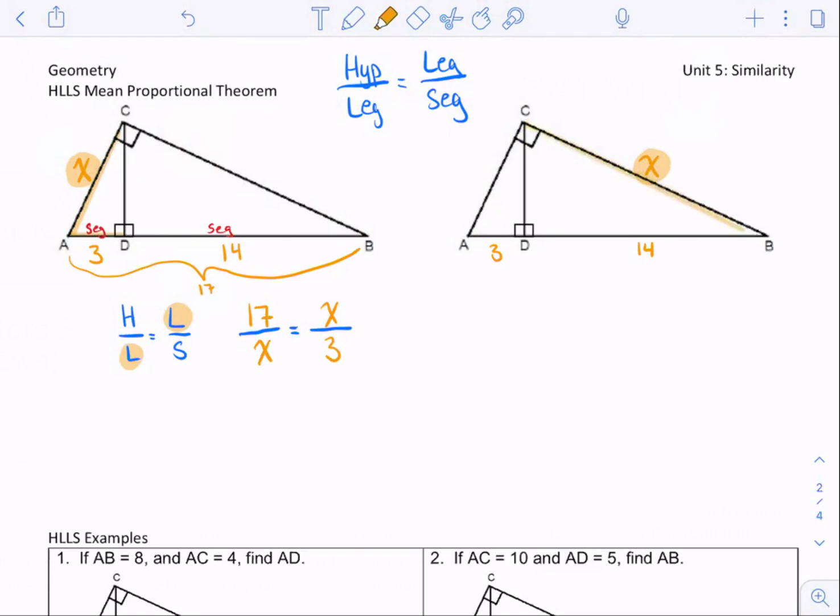And then which segment do we use? Now since I'm using this leg over here, you need to use the closer segment. So this smaller segment is the one you would use for this example on the left. This is the leg that's labeled. So since this is the leg that's labeled, this is the segment we would use. So look at the difference between this proportion that I set up and this proportion I set up. That is how you set up Hills, because one of the two legs is the one marked here.